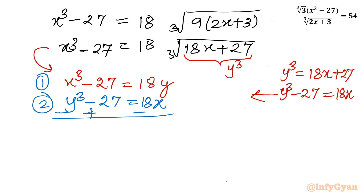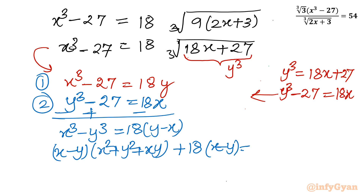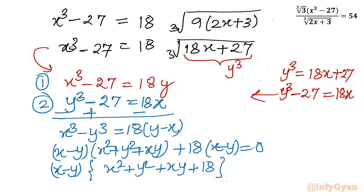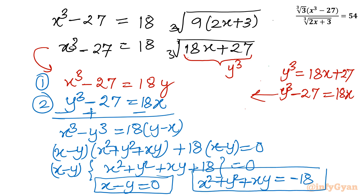Subtracting Equation 2 from Equation 1 gives: x³ - y³ = 18(y - x). Using the identity a³ - b³ = (a - b)(a² + ab + b²), and bringing all terms to one side, we get: (x - y)(x² + xy + y² + 18) = 0. From here we conclude: either x - y = 0, or x² + xy + y² = -18. We will solve both cases.